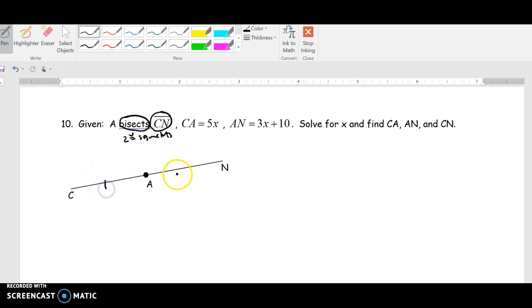So right away, I know CA is congruent to AN. So if CA is congruent to AN, then I know 5X is equal to 3X plus 10. So 2X is equal to 10.